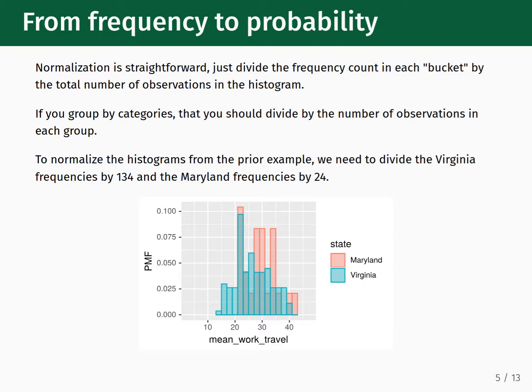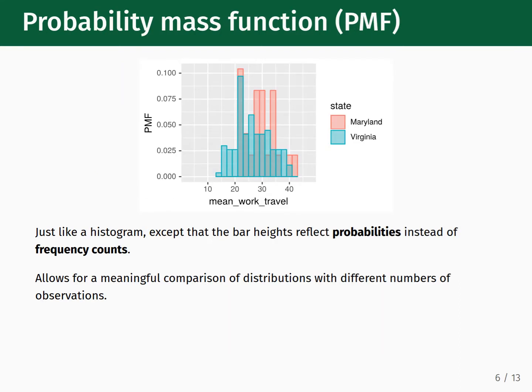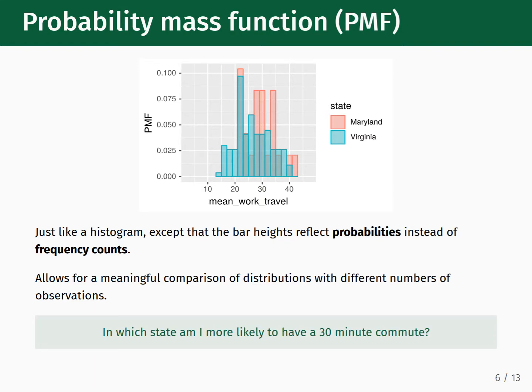The heights of the Maryland data points become much easier to compare with the Virginia ones. This object in the plot is known as a probability mass function, or PMF for short. It is just like a regular histogram, except that the bar heights reflect the probabilities of sampling a data point within a specific data bucket. Unlike frequency counts, PMFs for different data distributions can be directly and meaningfully compared. So, going back to our question of in which state am I more likely to have a 30-minute commute, we can now see that the answer is actually Maryland, as the PMF bar height at 30 is higher for Maryland than it is for Virginia.